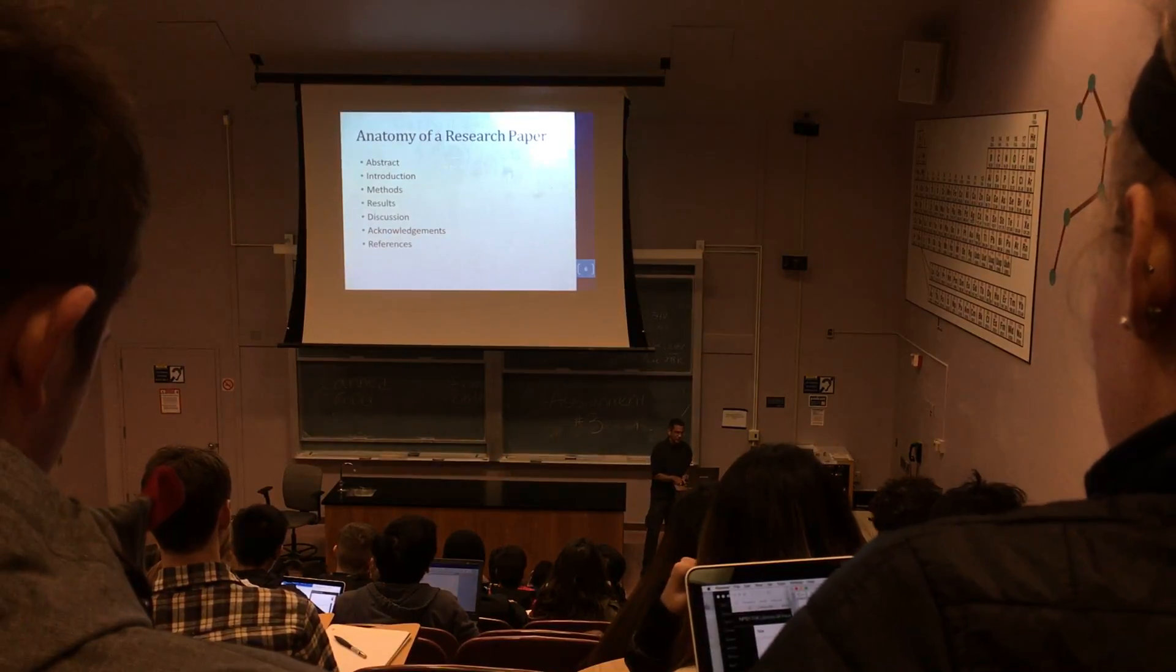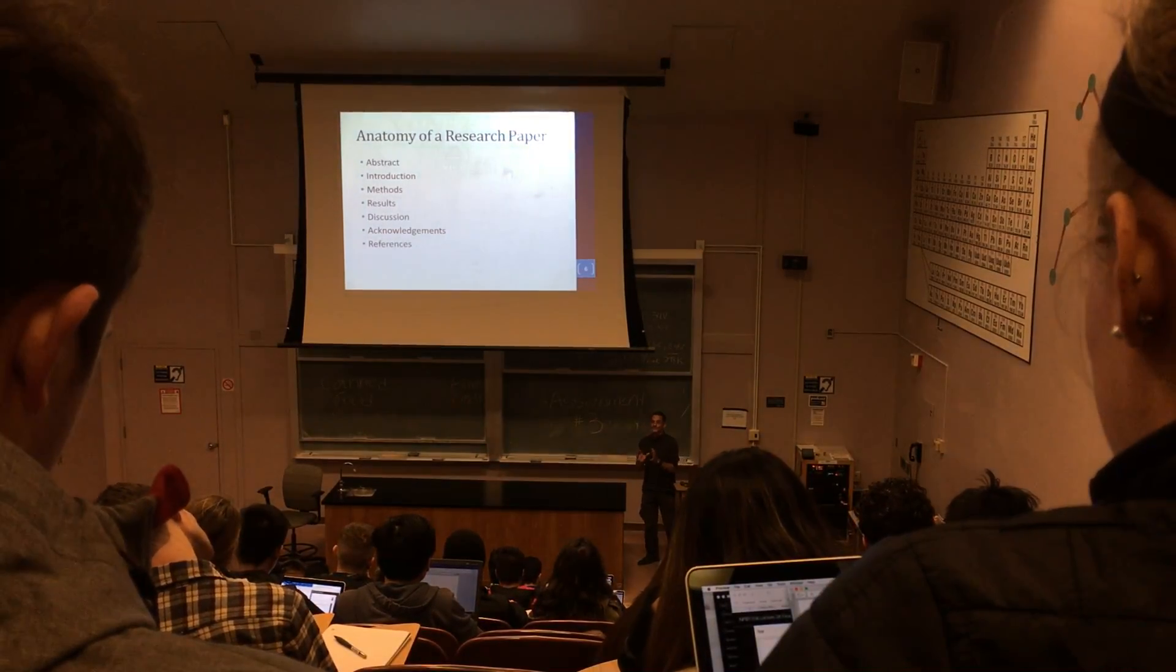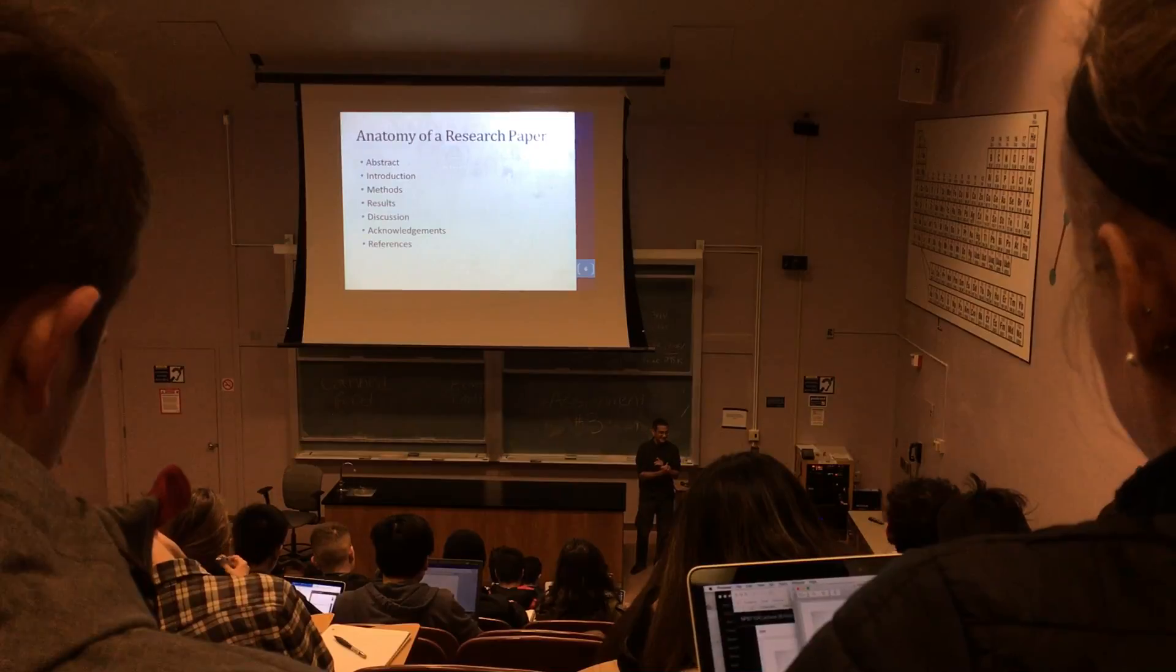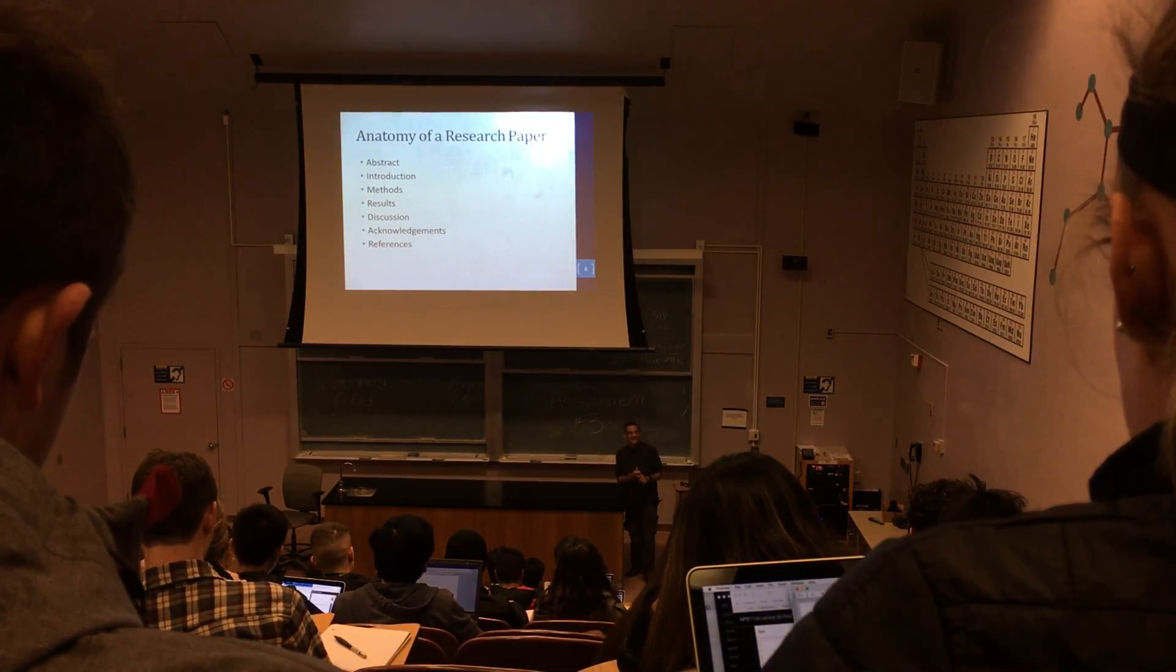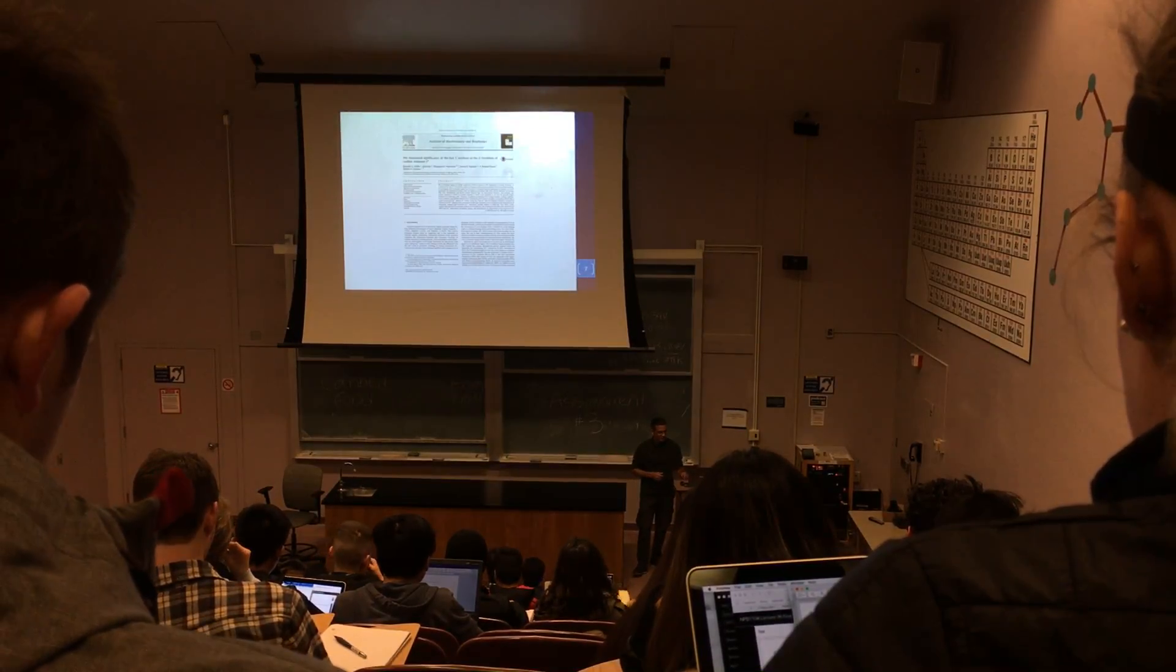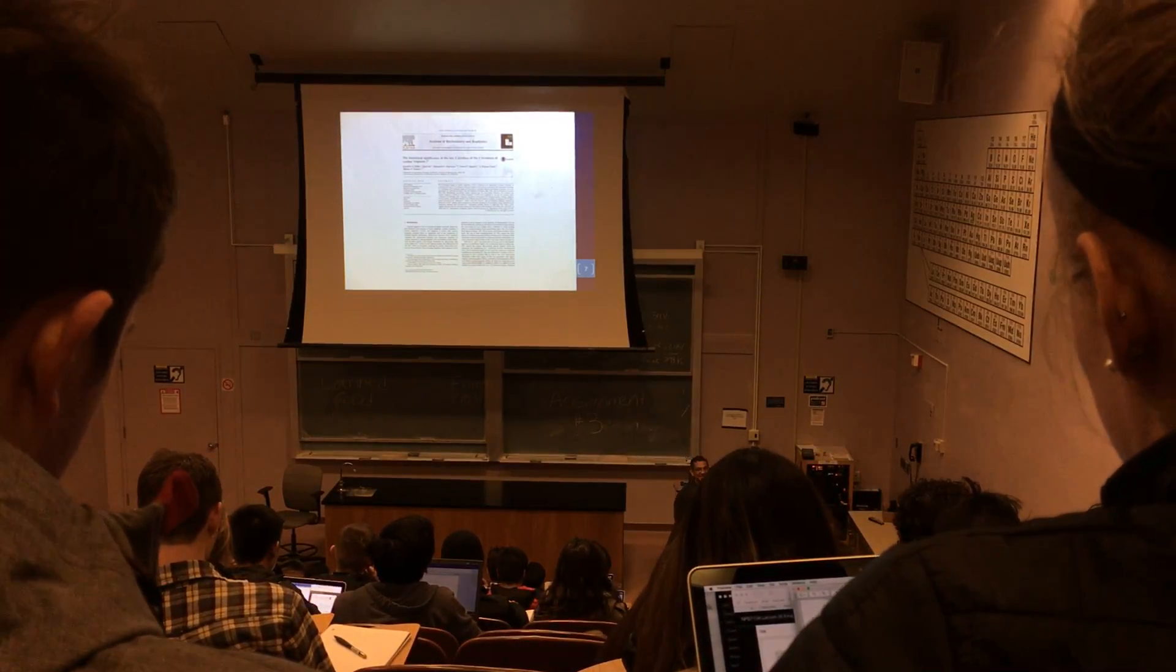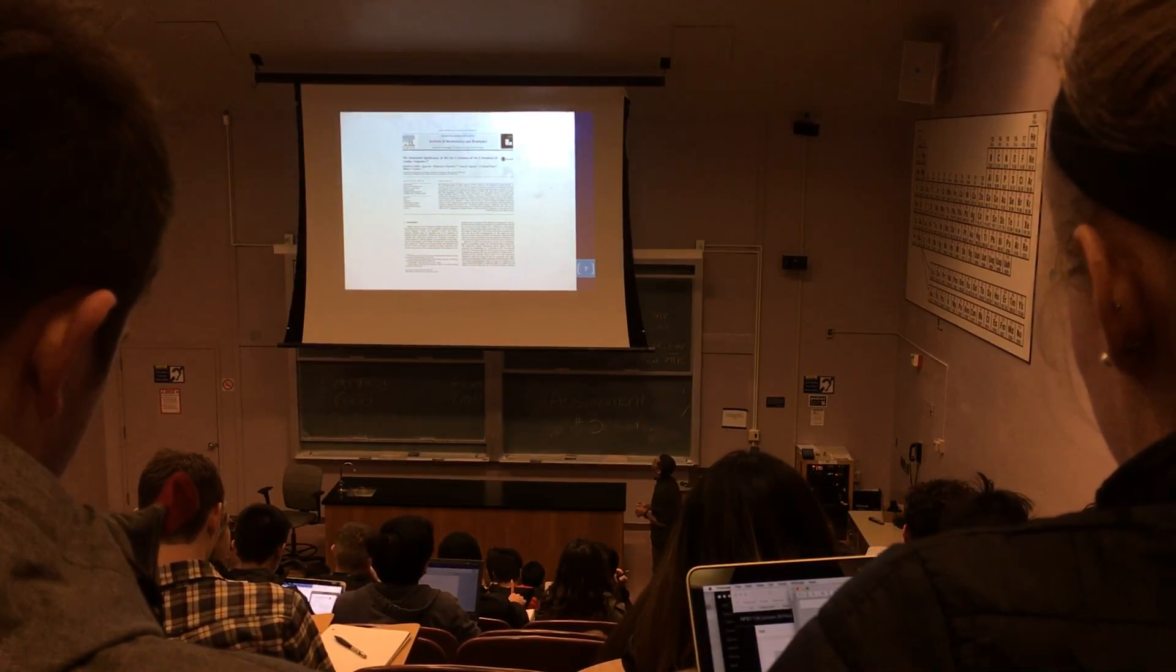All right, so a research paper generally has different categories. All of them will have an abstract, an introduction, a method, a result, a discussion, acknowledgments, and references. Some may not have acknowledgments, but all will have all of them. So this is one example of a paper. You have it in the back of your article. You don't need to read this. You just need to understand the structure of it. That all of them will have a title. They will have an introduction.